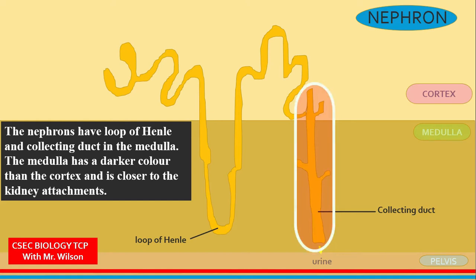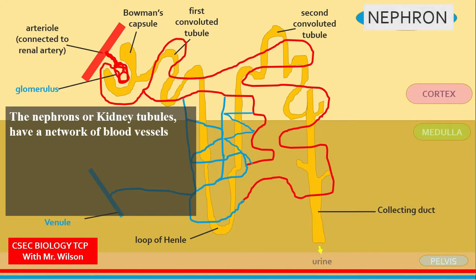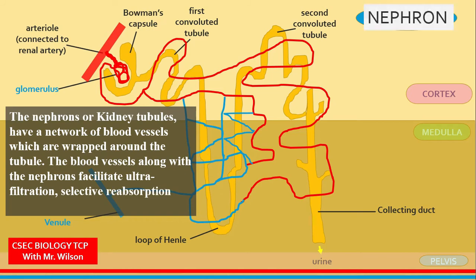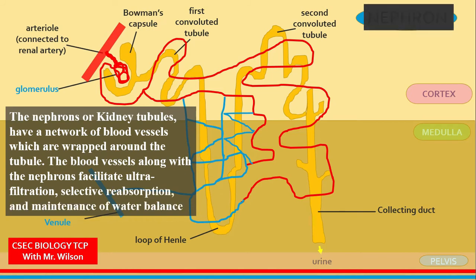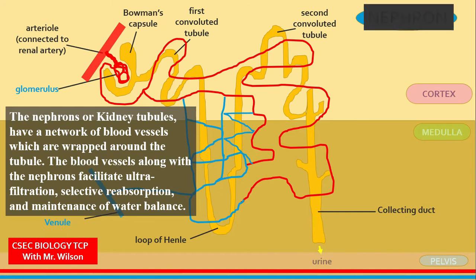It is very important to know the parts of the nephron as each part carries out different functions. The nephron, or kidney tubule, has a network of blood vessels wrapped around it. These blood vessels, along with the nephron, facilitate ultrafiltration, selective reabsorption, and maintenance of water balance in the body.